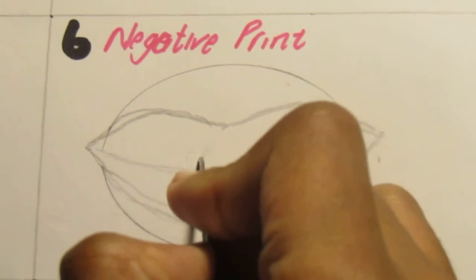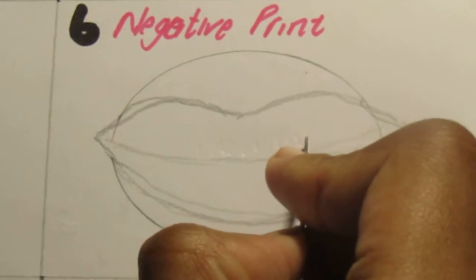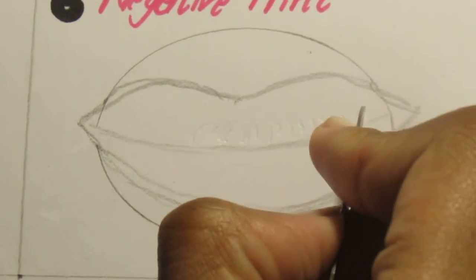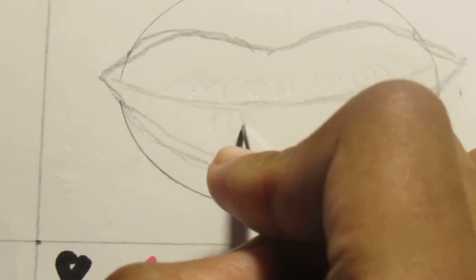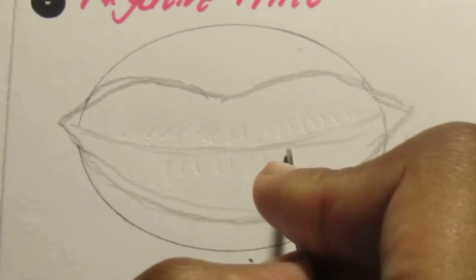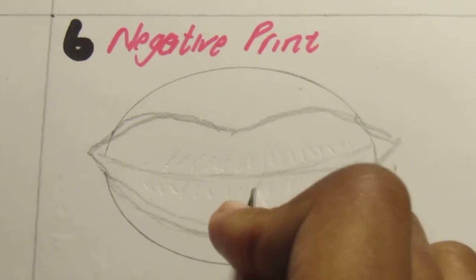lines where you see them. So usually on the lips, it flows like this. For other textures, it's gonna be more like bigger, straighter lines. Just follow how the drawing is going.